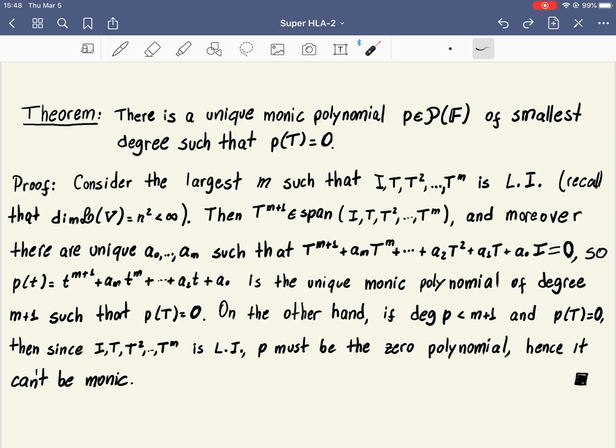If you have an operator T, so T is just a linear operator on some finite dimensional vector space, then there exists a monic polynomial. Monic means the leading coefficient equals 1.